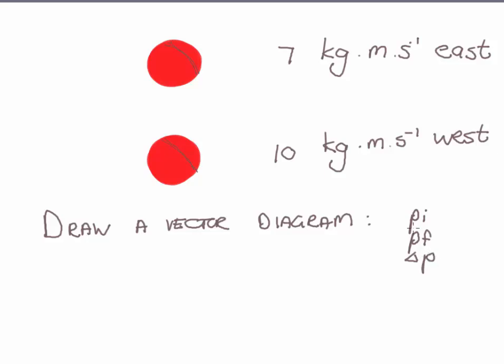So what we do here is we firstly use our formula. The formula is the change in P equals P final minus P initial. Now remember that we have to assign direction. So I'm going to say east is positive for this question.